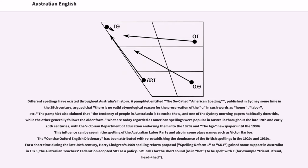For a short time during the late 20th century, Harry Lindgren's 1969 Spelling Reform proposal, Spelling Reform 1 or SR1, gained some support. In Australia in 1975, the Australian Teachers Federation adopted SR1 as a policy. SR1 calls for the short /ɛ/ sound, as in vet, to be spelt with E, for example friend to frend, head to hed.